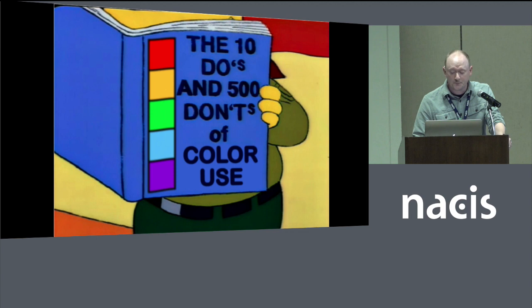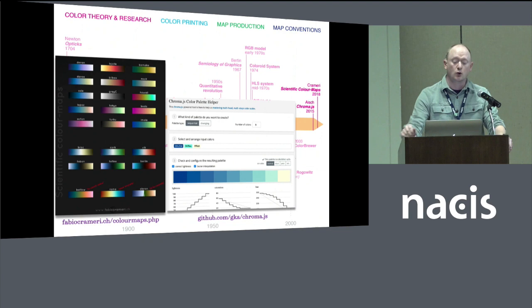The color research community remains very active. For instance, two examples: one can look to the work of chroma.js or Fabio Crameri's work in their efforts to hashtag end the rainbow by developing perceptually uniform, intuitive color ramps.